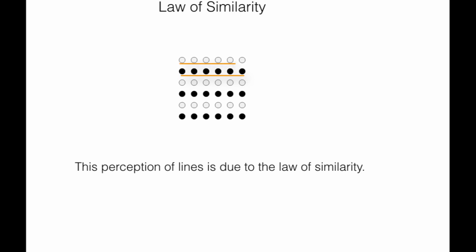You can see that there is a horizontal line forming from the black circles and a horizontal line forming from the white circles. You will not see the vertical lines because then you will have the pattern white, black, white, black, which is not similar objects. But you can see all the white circles and the black circles as they are similar, they seem to form a group. So this is the law of similarity.